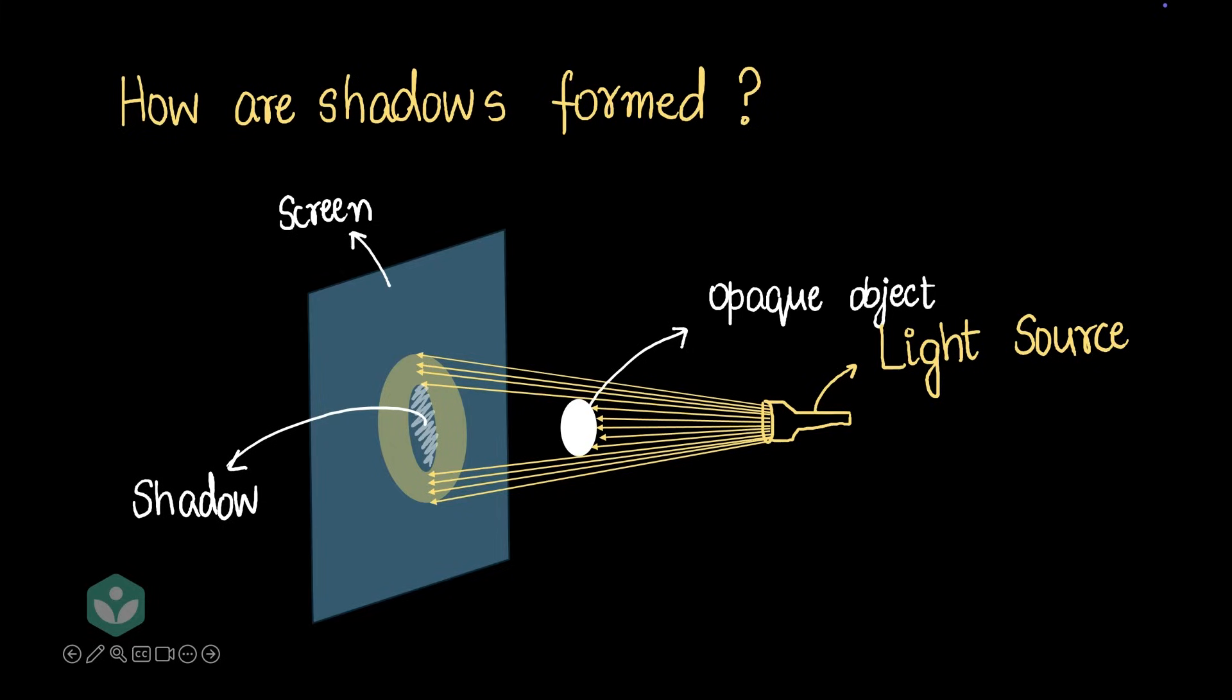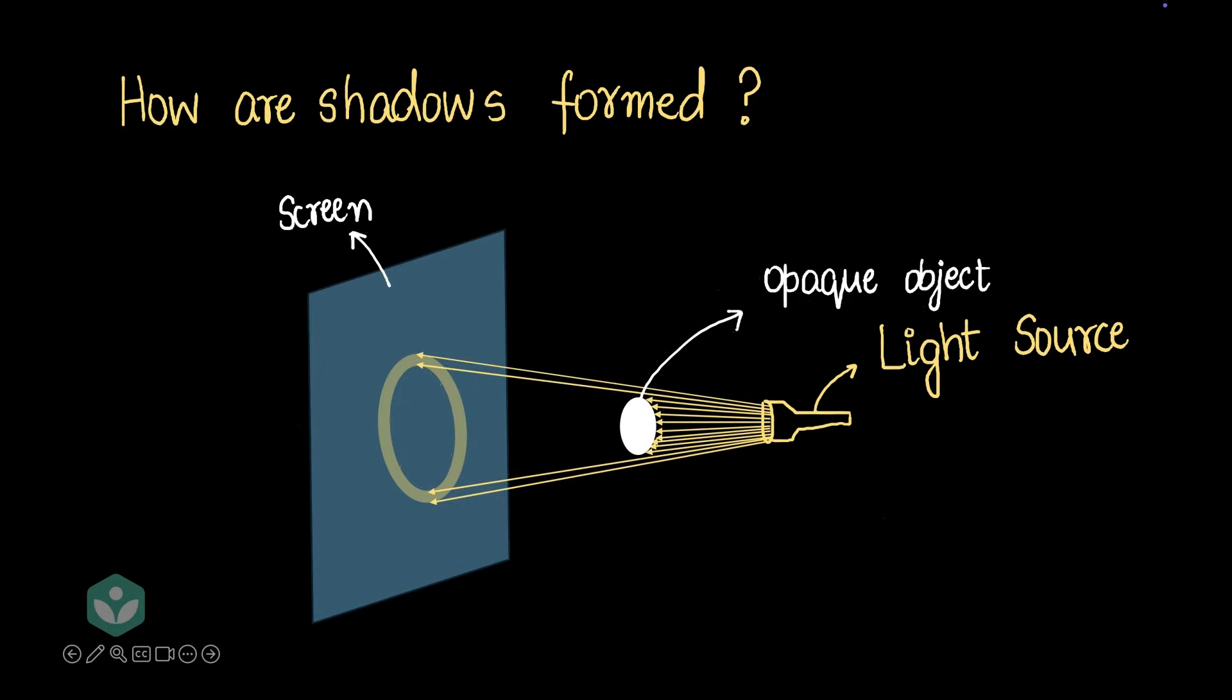So what would happen if we moved the object closer to the torch? What do you expect? I'd like you to pause and try to predict the scenario. Well, I hope you guessed it right. When you move the object closer to the light source, what happens is that the size of the shadow gets enlarged, and that ring of light gets smaller.